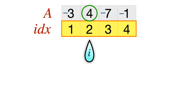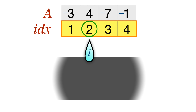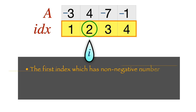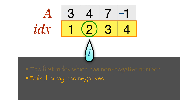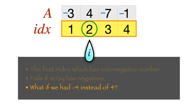Index two is positive, telling us that two is the missing number, since all present numbers would have had their corresponding index negated. This approach is O(n) time and O(1) space and looks promising — but it fails if the array contains negative values or zeros. For example, if negative four was already in the array, all numbers would end up negative and we'd be confused about which is missing.